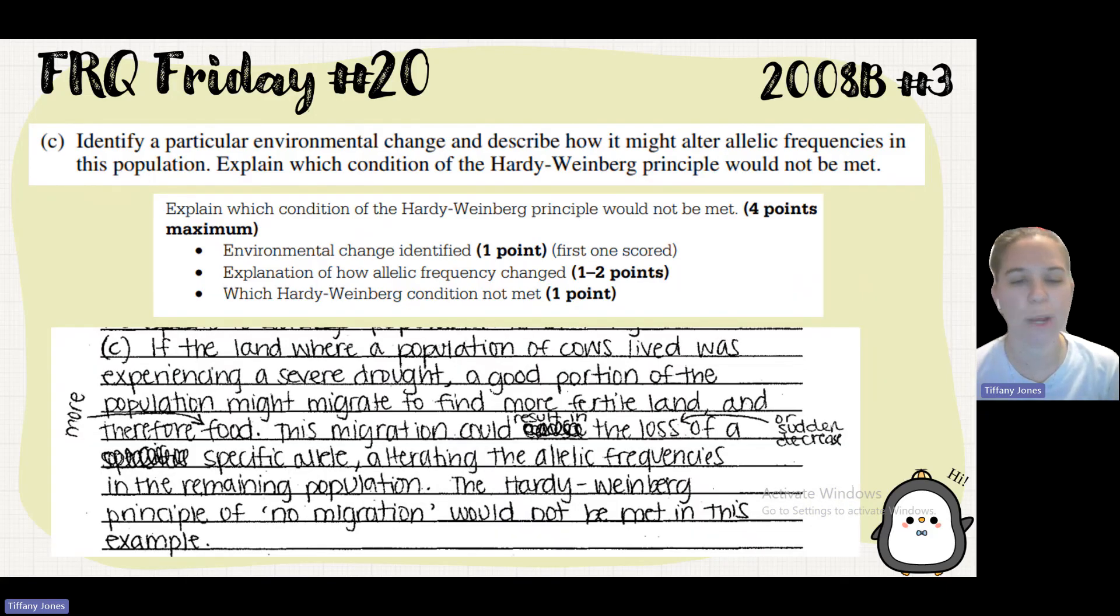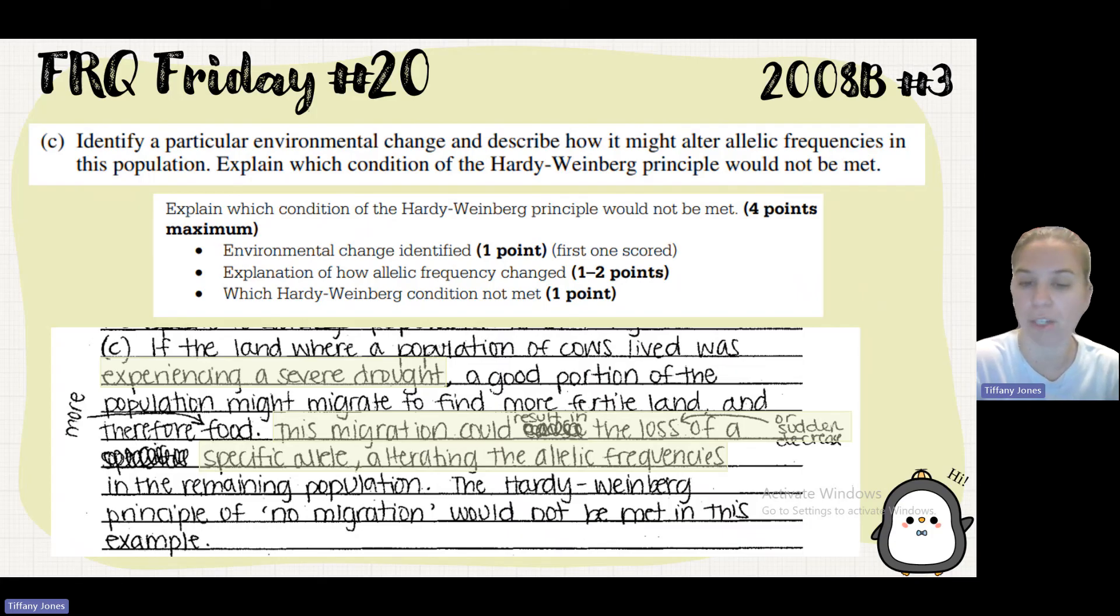So the student says, if the land where a population of cows lived was experiencing a severe drought, a good portion of the population might migrate to find more fertile land and therefore more food. This migration would result in a loss of the specific alleles, altering the allele frequency in the remaining population. The Hardy-Weinberg principle of no migration would not be met in this example.